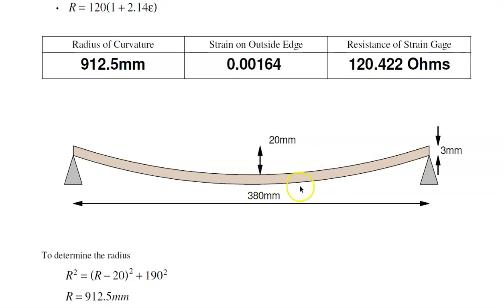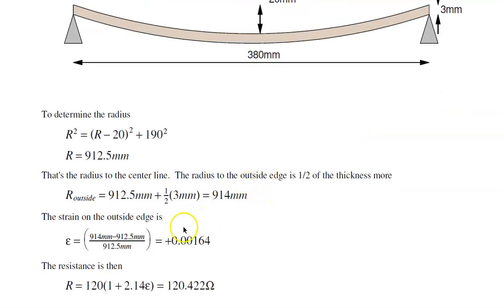That's to the center line. The outside edge will be 1.5 millimeters longer, or 914 millimeters. The strain on the outer edge is the new length minus the equilibrium length, or essentially the difference, or the thickness, half the thickness, 1.5 millimeters over 912, gives the strain of 0.0016.